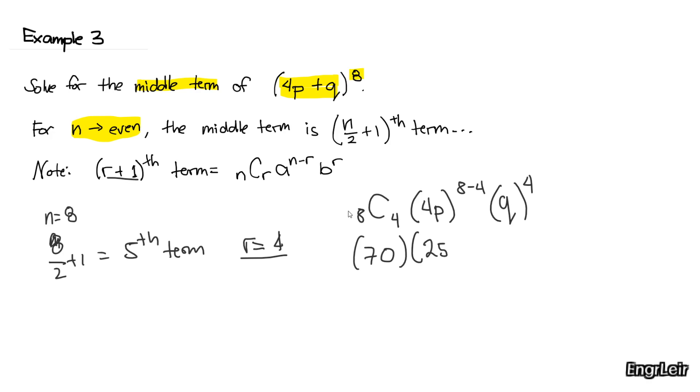We have 256P raised to 4, and then Q raised to 4.